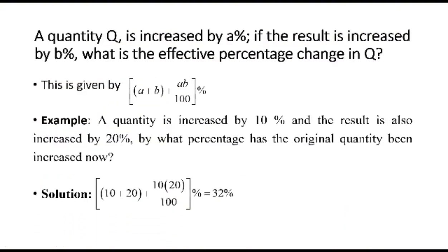Now, if a quantity q is increased by a percent, the result is increased by b percent. What is the effective percentage change in q? This is given by a plus b plus a fraction with numerator ab, denominator 100. That's some percent.